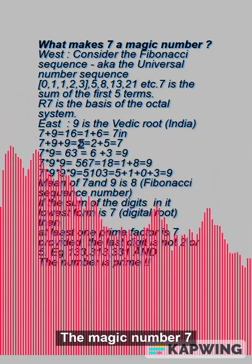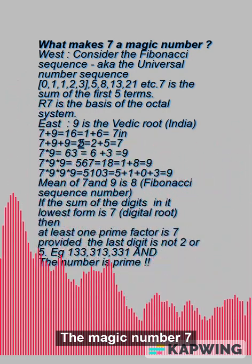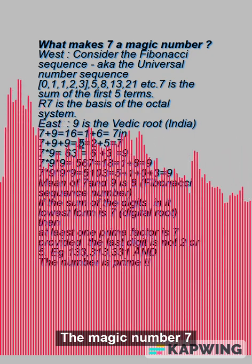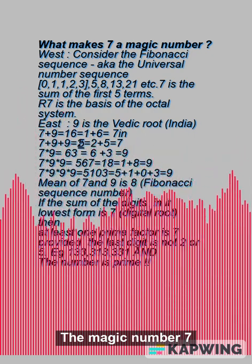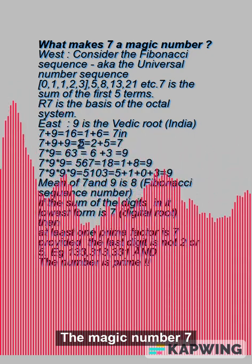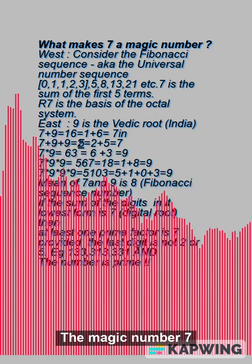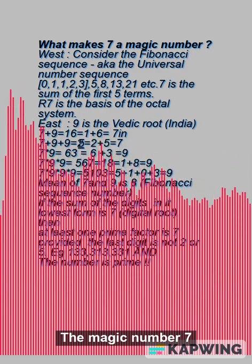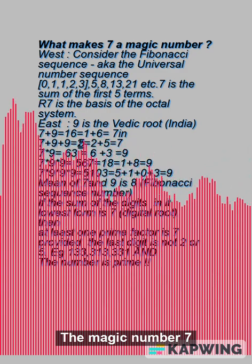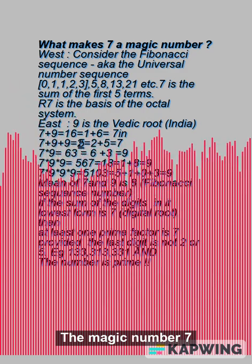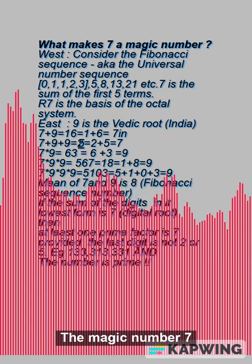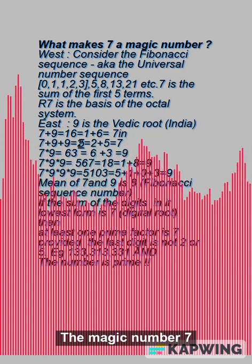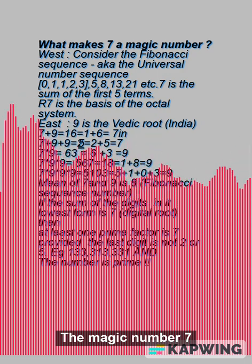West: the Fibonacci Sequence goes 0, 1, 1, 2, 3, 5, 8, 13, 21, etc. 7 is the sum of the first 5 terms. 0 to 7 is the basis of the actual system.